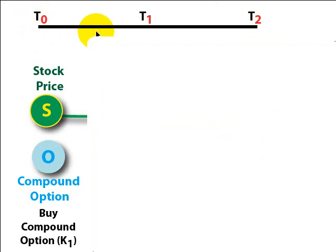Today is T0, T1 is a point in time in the future, and then T2 will be even later than that.